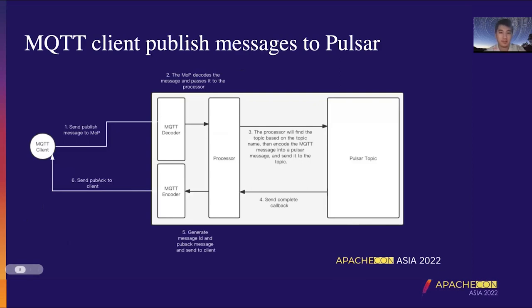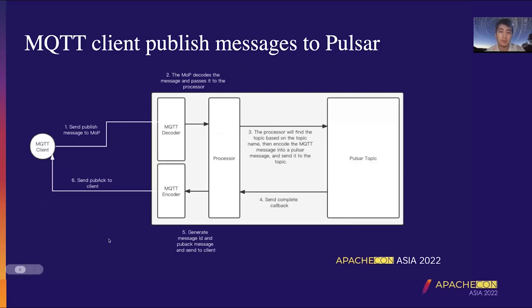In the publishing process, the MQTT client will send a message to MOP. The connect operation has already been completed. MOP will pass the MQTT message and hand it over to the internal processor. The processor will find the topic by the topic name and then convert the MQTT message to the message format stored by Pulsar. When the publish operation is successful, the publish response will be sent to the MQTT client through the callback. In this way, a simple sending process is complete.